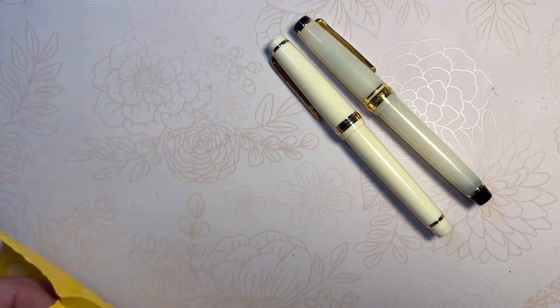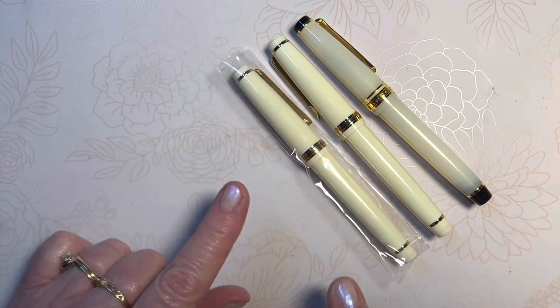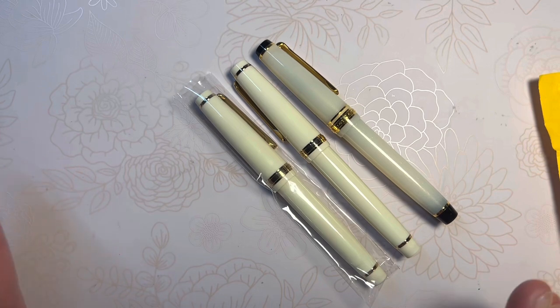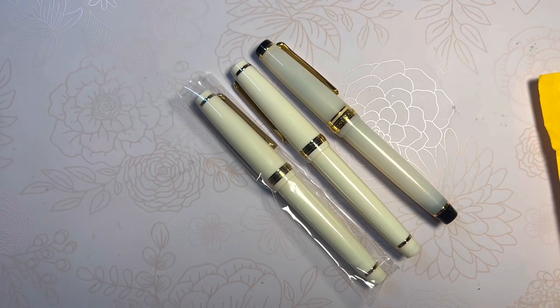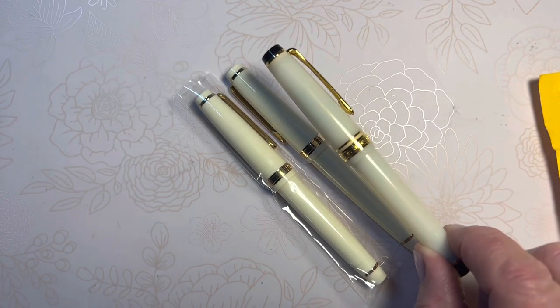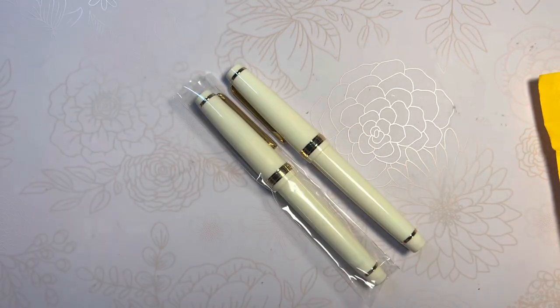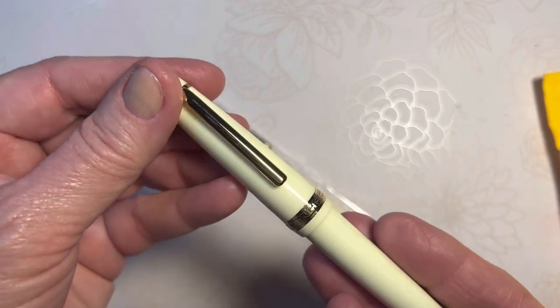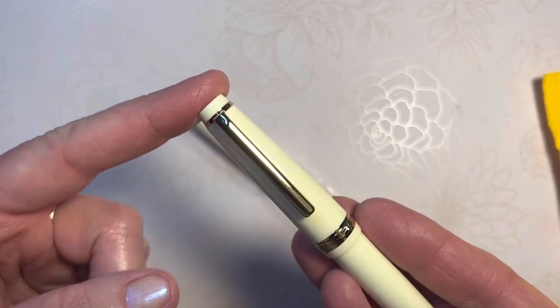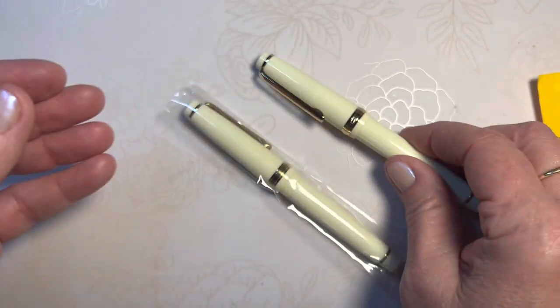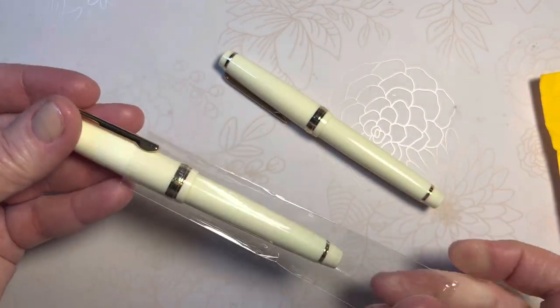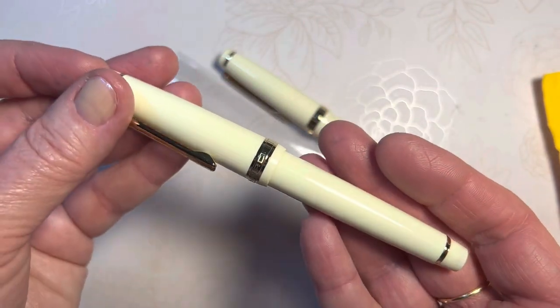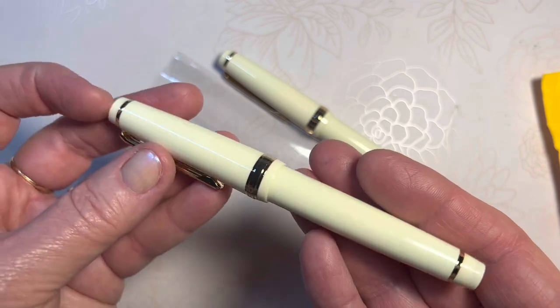So today I'm going to go back to this set of pens because when I shared them with you, I only shared the fine in comparison with the Sailor Pro Gear Slim. Now I would like to show you the difference. If you're interested in ordering the set, of course it comes with fine and extra fine. So let me put the Sailor Pro Gear Slim aside out of the way, and we're going to do a writing test with this Jinhao 82 fine nib, which we've already seen, and the Jinhao 82 extra fine nib today.